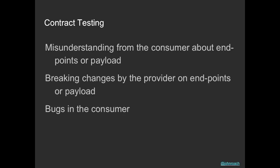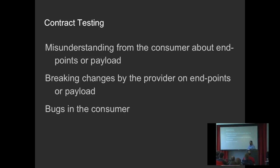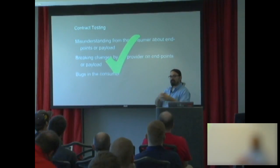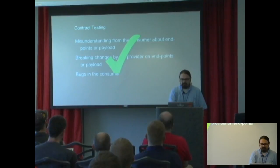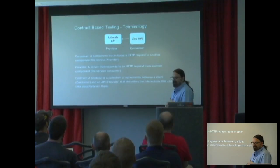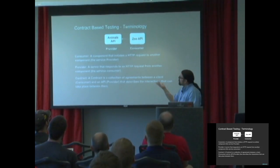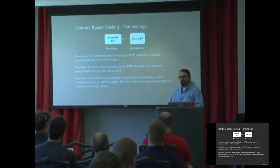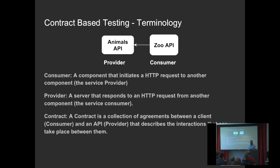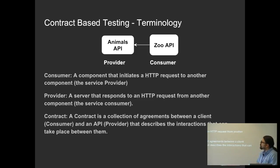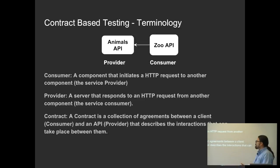Let's review our requirements again. If it's only on that boundary, contract testing can capture misunderstandings from the consumer about endpoints and payload, breaking changes by the provider, and bugs in the consumer. Key terminologies: a consumer initiates an HTTP request; a provider responds to it; and a contract is a collection of agreements between the consumer and provider that describes the interactions between them.